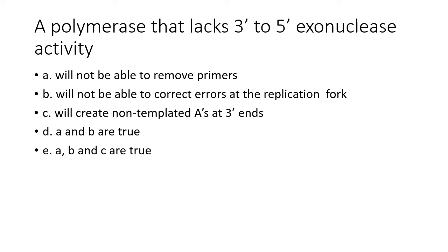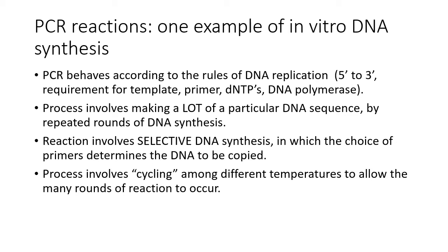A polymerase that lacks 3' to 5' exonuclease activity will not be able to correct errors at the replication fork, and will create non-templated A's at the ends. The answer is B — it cannot correct replication errors. We're going to start on examples of in vitro DNA synthesis reactions: the first being PCR, and the second next time will be Sanger DNA sequencing.